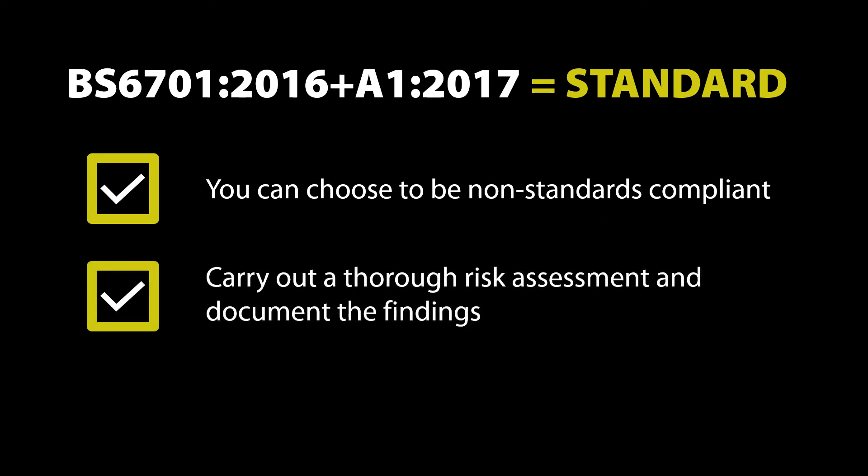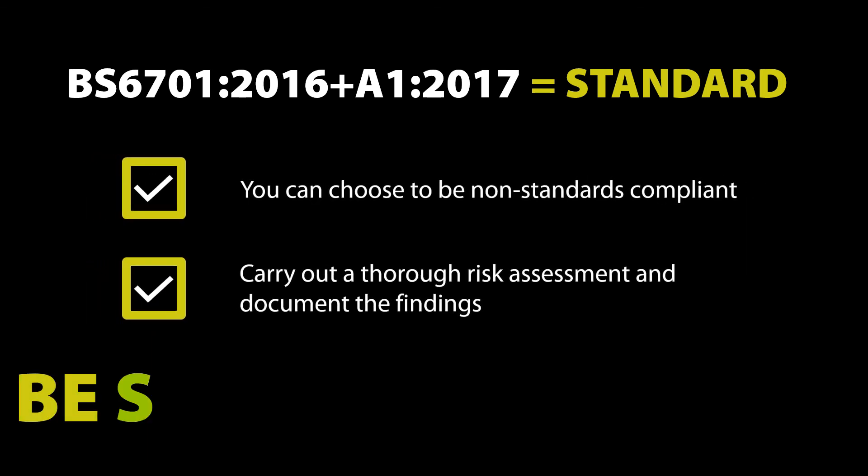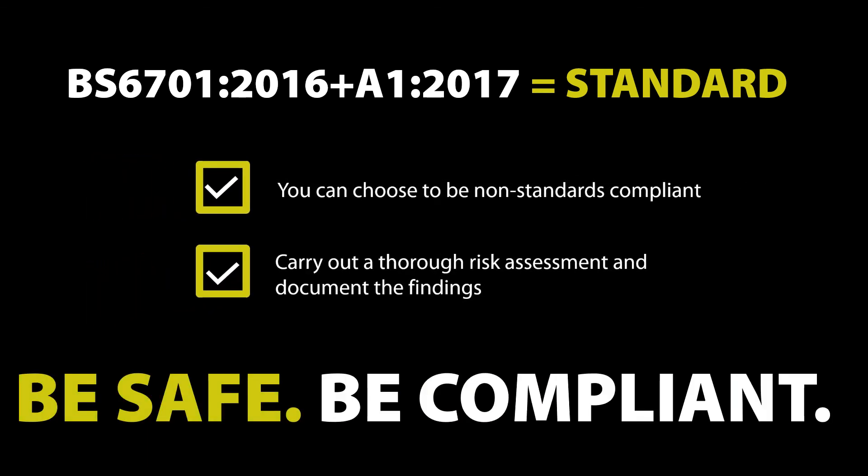Finally, BS 6701 is currently a standard, therefore you can choose to be non-standard compliant, or you can carry out what is known as a BS 9999 risk assessment to justify the downrating of the building's requirements. However, if you want to be safe, be compliant.